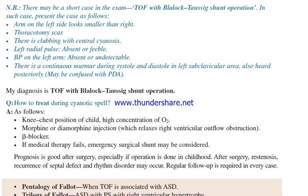How to treat during a cyanotic spell: knee-chest position of the child, high concentration of oxygen, morphine or diamorphine injection (which relaxes right ventricular outflow obstruction), beta-blocker. If medical therapy fails, emergency surgical shunt may be considered. Prognosis is good after surgery, especially if the operation is done in childhood. After surgery, re-stenosis, recurrence of septal defect, and rhythm disorders may occur. Regular follow-up is required.